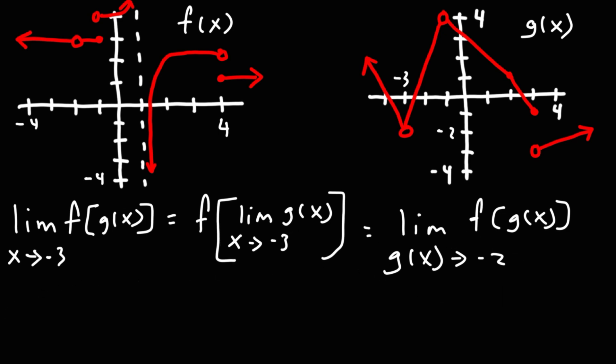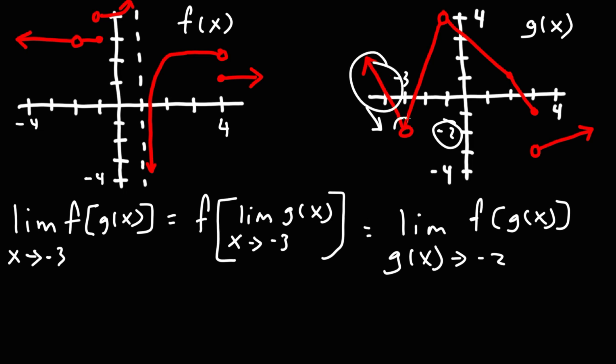Now this part you need to be careful with. Does g of x approach negative 2 from the left side or from the right side? Think about that — that's very important. As x approaches negative 3 from the left side, we know g approaches negative 2. Now, g is on the y-axis, so the g function is approaching this y value of negative 2 from above this point.